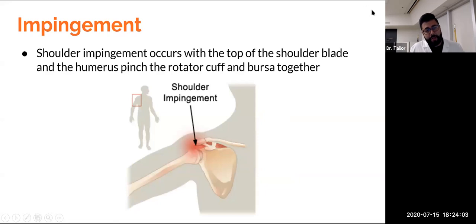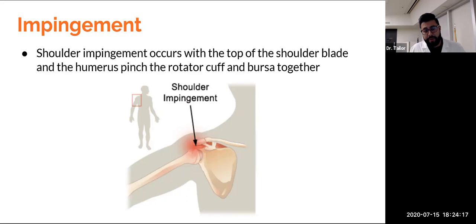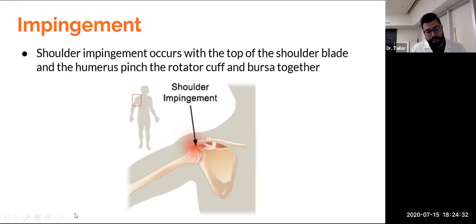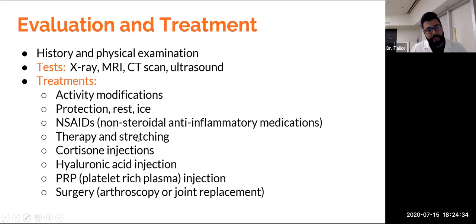Another common scenario is shoulder impingement — really when you raise your arm up to the side or in certain motions above the head, especially with overhead activities like tennis players with overhead serves. What happens is the humerus bumps into the bone above it — the acromion — and the rotator cuff sits right in between. It pinches together along with the bursa, and that repetitive motion causes a lot of inflammation and pain. Very easy history — your physical exam is plenty. A lot of the tests I do in clinic are more than enough to diagnose all of these conditions.